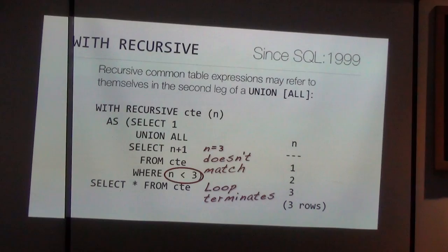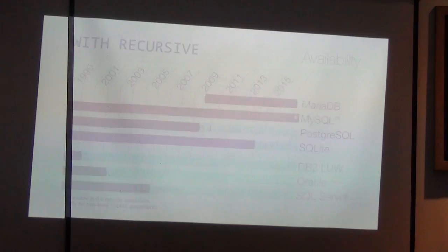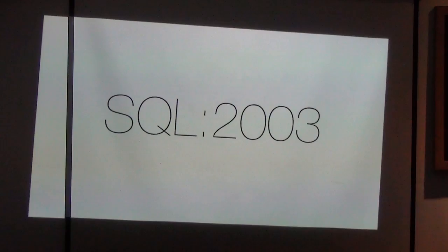This use case is called the row generator — you can generate rows out of nothing. The most important use case for row generators is generating test data. Have you ever wanted a million rows in a database just for testing? Here you go. The same availability as the non-recursive form: MySQL 8.0, whenever that is released, and SQLite can do this as well. Many more use cases are related to hierarchies or graph processing.